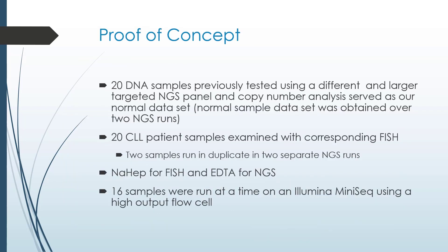We performed a proof of concept analysis using the OGT NGS panel. We began by generating a normal reference set consisting of 20 DNA samples from patients who had an indication other than CLL, who had been tested and found to be normal using a different and larger targeted NGS panel and copy number analysis. This reference set was obtained over two NGS runs. We included 20 CLL patients who were previously characterized using FISH, and two samples were run in duplicate over two separate NGS runs. Peripheral blood was collected in sodium heparin for FISH and in EDTA for NGS. We ran 16 samples at a time on an Illumina MiniSeq using a high output flow cell.